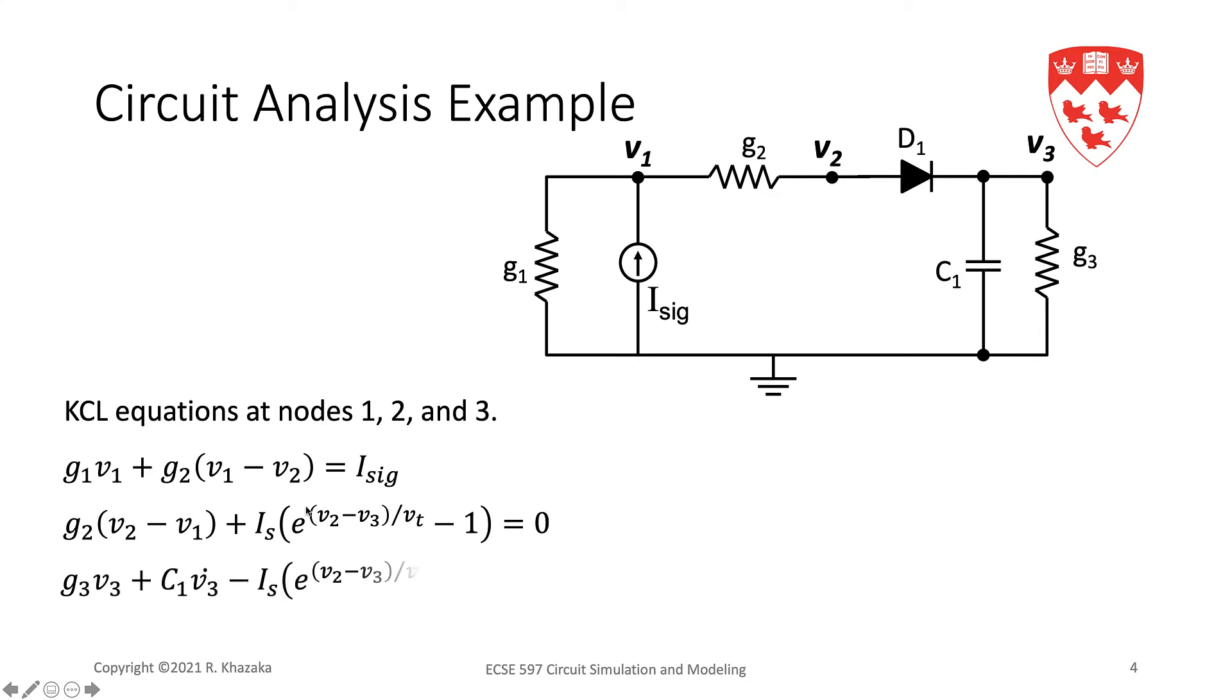We apply KCL at node 3. We have the current in G3, which is G3*V3, the current in the capacitor, which is C1*V3_dot (the derivative with respect to time), and the current in the diode. The current leaving node V3 through the diode is -IS*(e^((V2-V3)/VT) - 1).